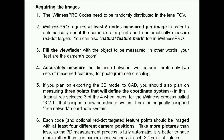Each code and optionally red dot targeted feature point should be imaged with at least four different camera positions. Take more pictures rather than fewer, as the 3D measurement process is fully automatic. It is better to have more rather than fewer camera observations of each 3D point of interest.